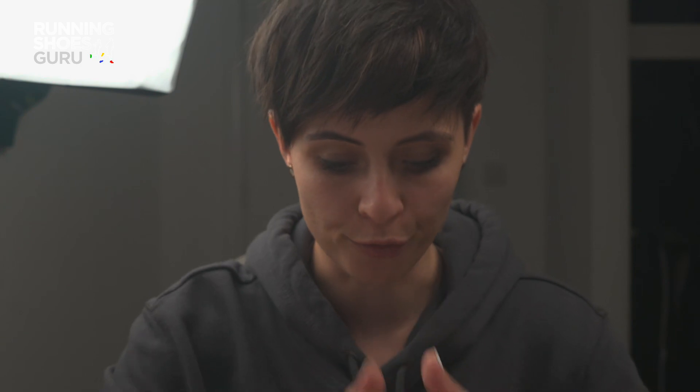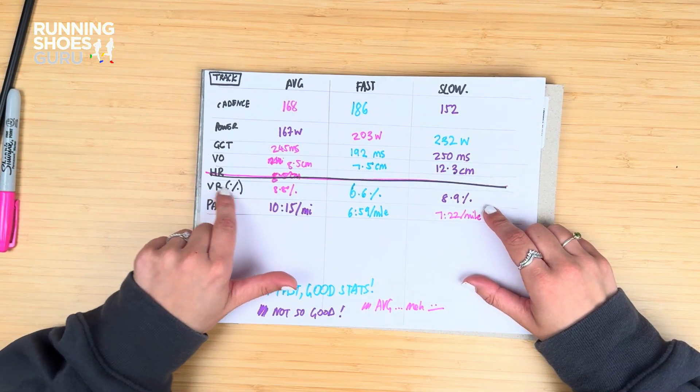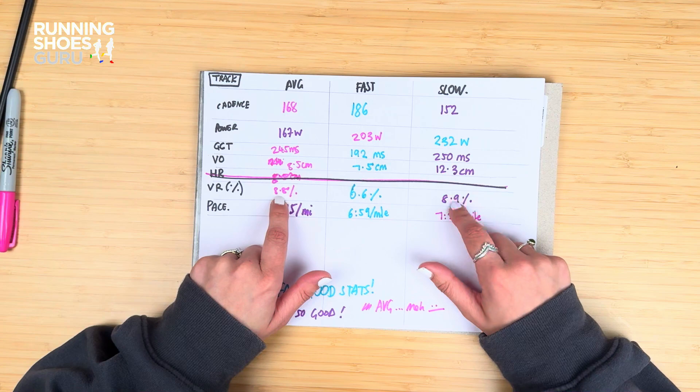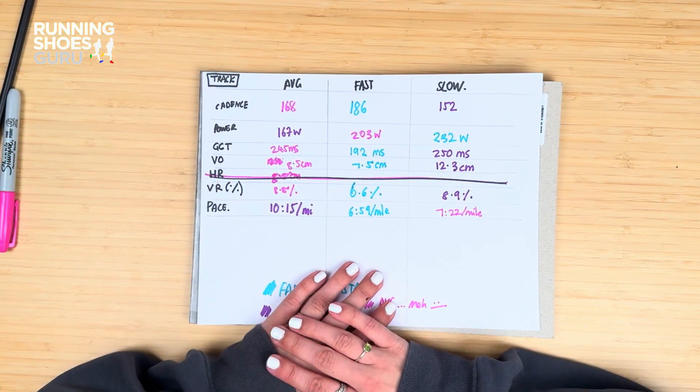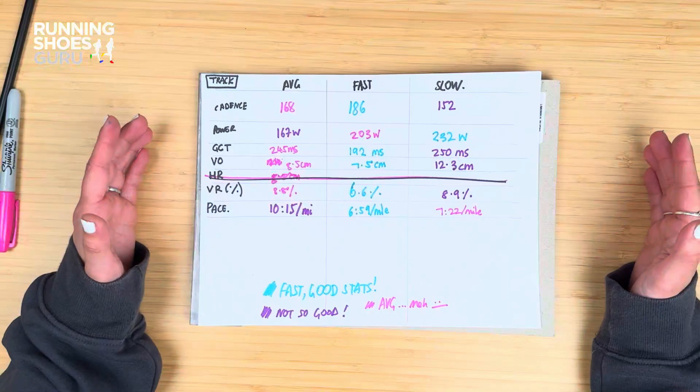Vertical oscillation is how much you're moving up and down in a run. Obviously we don't want to expend energy doing that — we want to go forward. The fast cadence gets rid of a centimetre of going up and down, meaning I can be a more economical runner. The vertical ratio — the percentage of my stride spent going up and down — drops from 8.8% average to 8.9% slow, but the fast cadence slashes it right down to 6.6%.